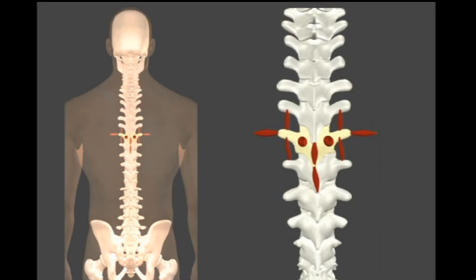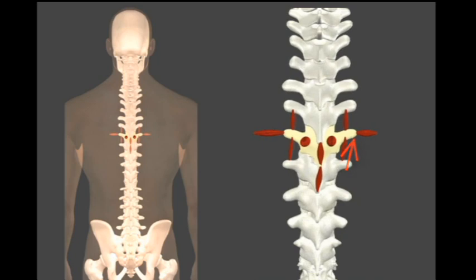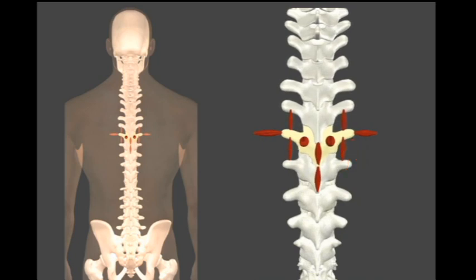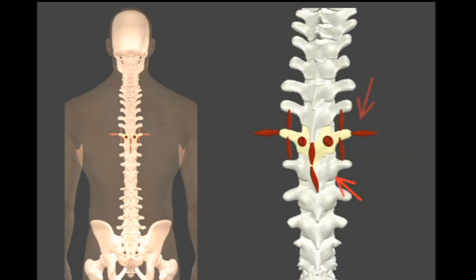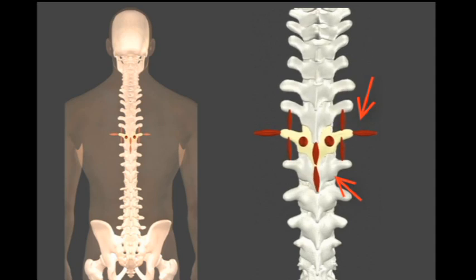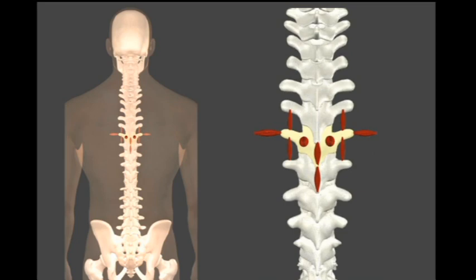Now if you have a bone that goes directly sideways, you have muscles that can pull that bone back into position, and that's true whether it goes right or left. Now if the spine goes into a twist, you have those same muscles plus some other muscles back here that can pull those bones back into position, and that's true whether a twist to the right or to the left.